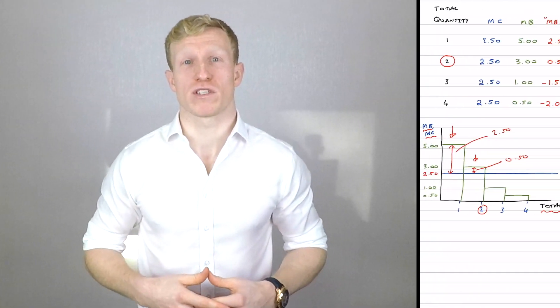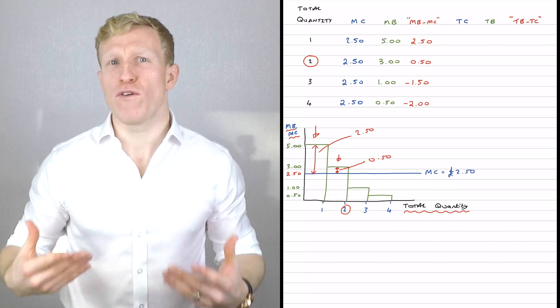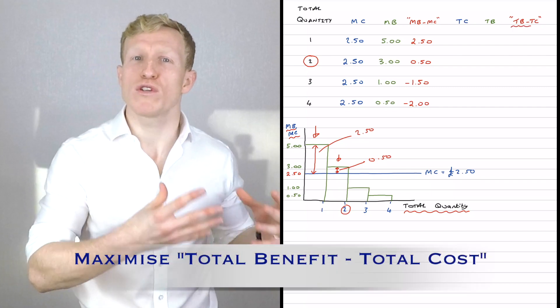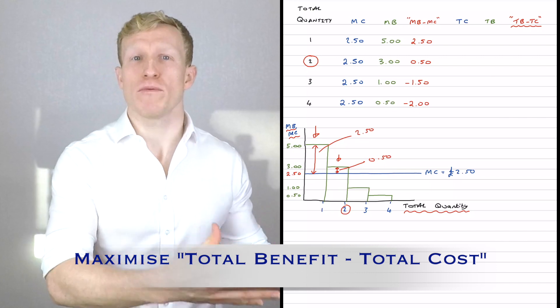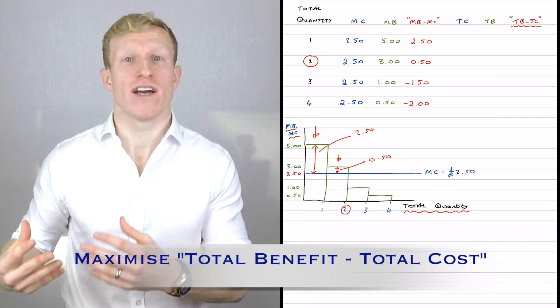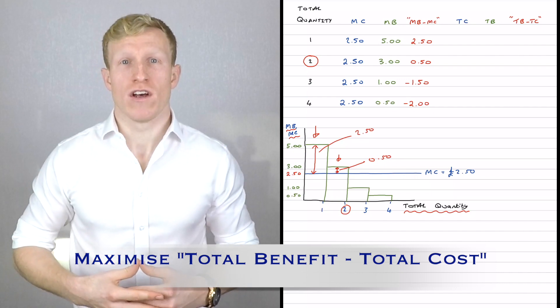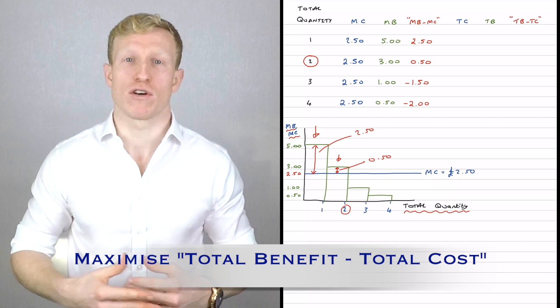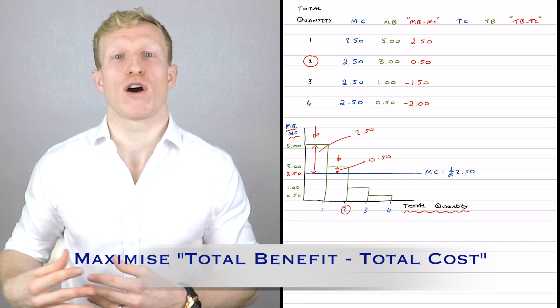To understand the intuition for why it's optimal to buy more only when marginal benefit exceeds marginal cost, it helps to understand what the consumer is trying to do. Whenever we buy products or decide to do an activity, we're trying to make ourselves as happy as possible. More formally, economists say we're trying to maximise the difference between the total benefit gained from consuming a quantity of products minus the total cost paid for those products.